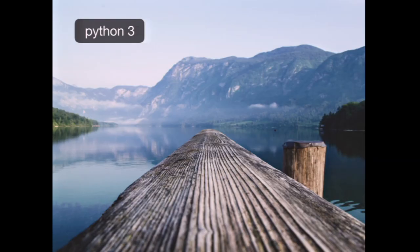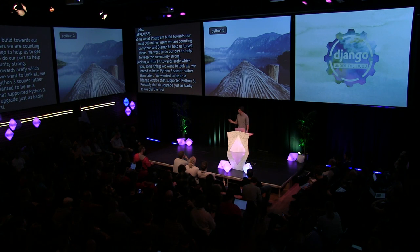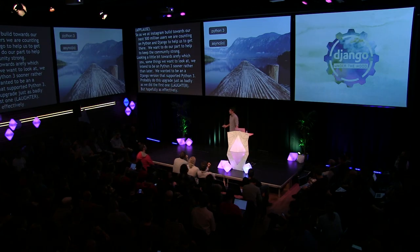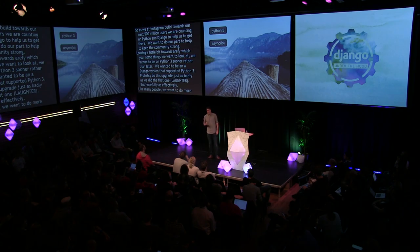Looking towards the future, we intend to be on Python 3 sooner rather than later — in fact, this was a big motivation for getting to Django 1.8 in the first place. Like many people, we want to do more with async and specifically asyncio. We actually already use asyncio — the Python 2 backport called Trollius — to do fan-out of backend data requests from the web server, but we know we're wasting web server capacity using synchronous uWSGI workers for all requests, so we want to explore async web serving.